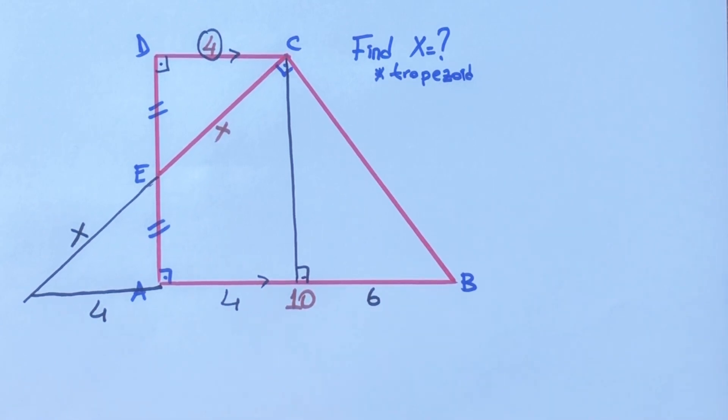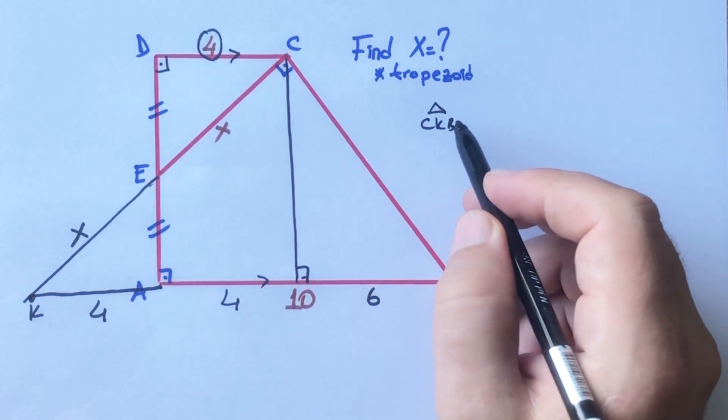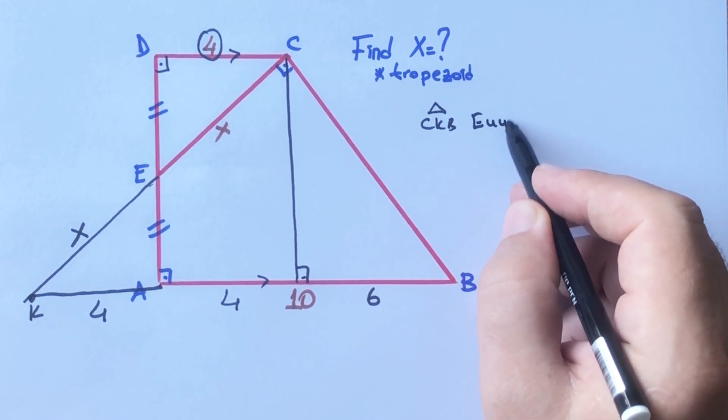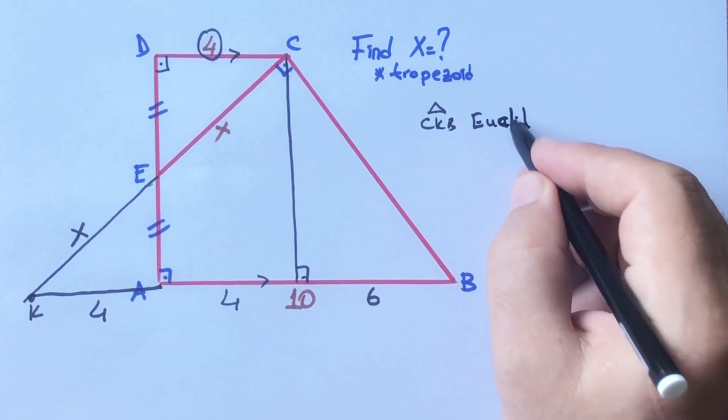Therefore, let's call here K point. In this triangle, if we apply Euclidean theorem...